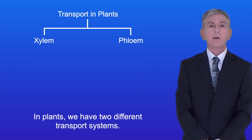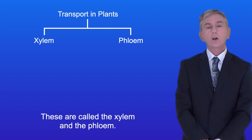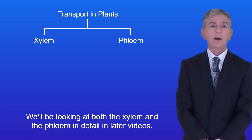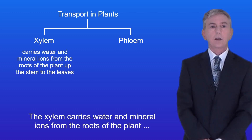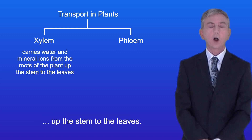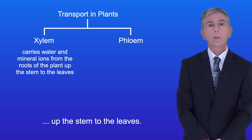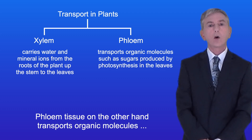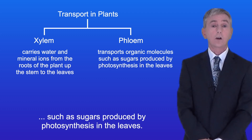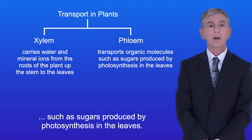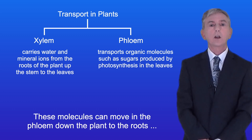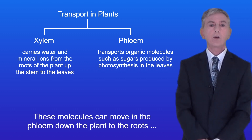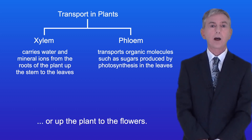In plants we have two different transport systems. These are called the xylem and the phloem. We'll be looking at both in detail in later videos. The xylem carries water and mineral ions from the roots of the plant up the stem to the leaves. Phloem tissue on the other hand transports organic molecules such as sugars produced by photosynthesis in the leaves. These molecules can move in the phloem down the plant to the roots or up the plant to the flowers.